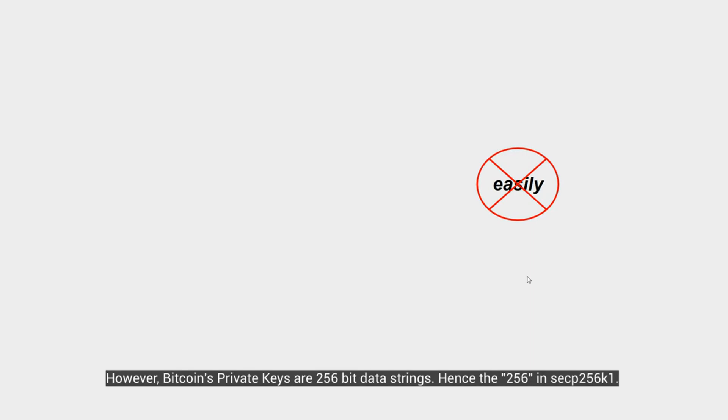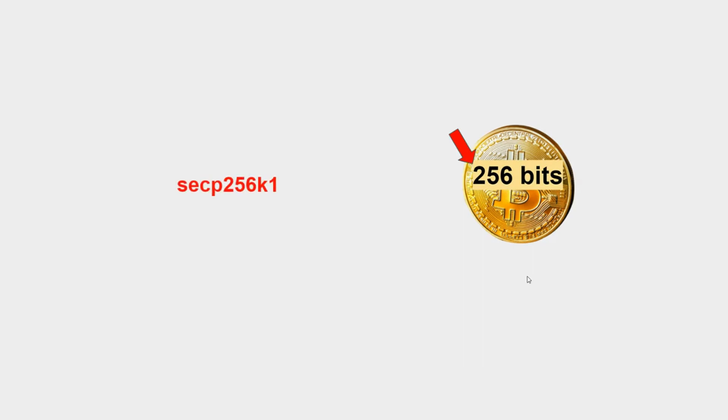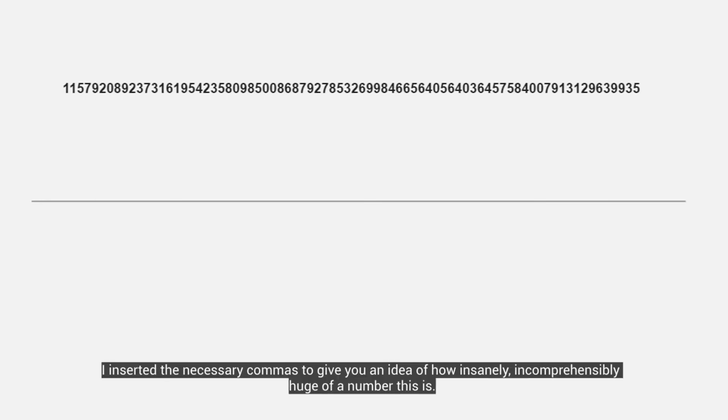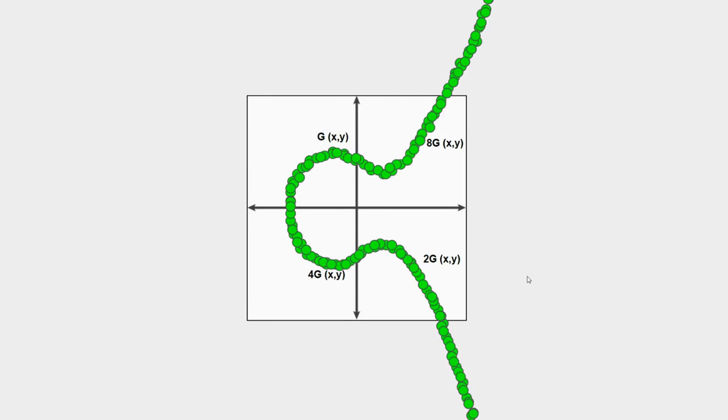However, Bitcoin's private keys are 256 bits, hence the 256 in SECP 256K1. The number you see here is an example of a 256 bit number used for a private key. I inserted the necessary commas here to give you a better idea of how insanely, incomprehensibly huge of a number this is. So just imagine how many slides, images, curves, and reflecting operations it would have taken if we added g to itself as many times as that previous super large number. It's virtually impossible even for computers to reverse engineer that.